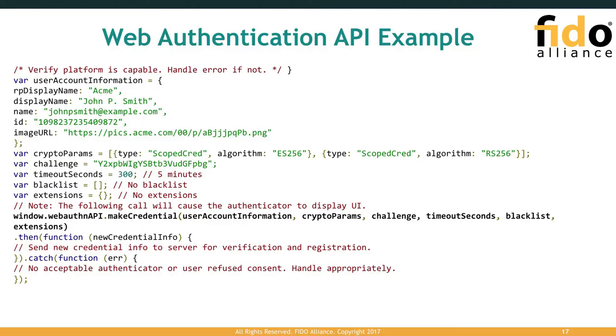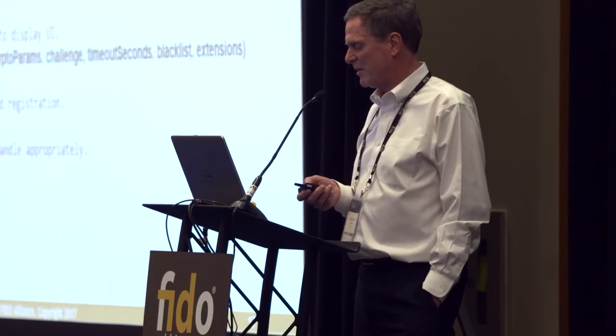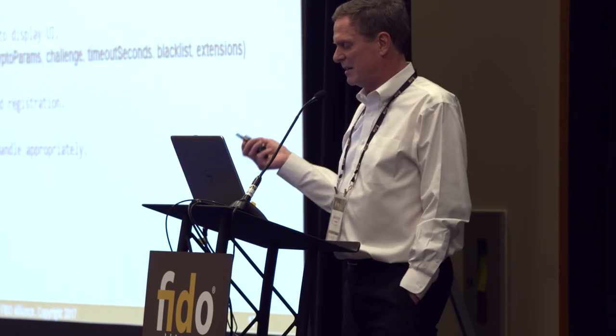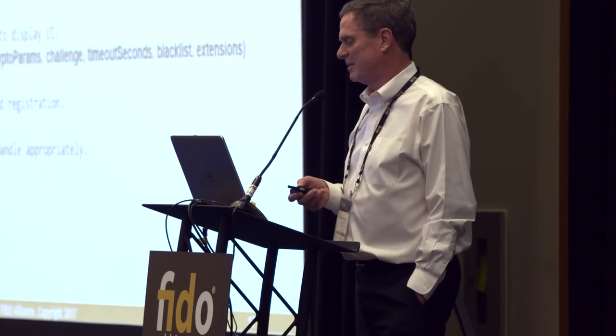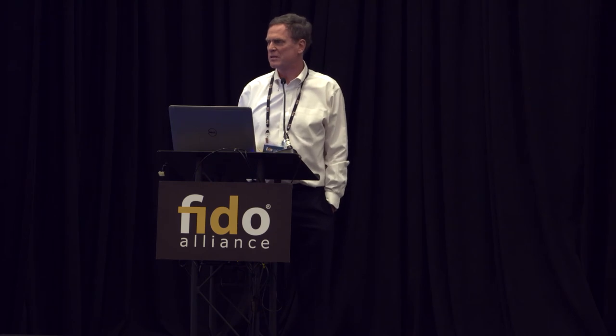Here's a quick example of a web authentication API — it's very simple. We have our crypto parameters and algorithm parameters, and we just wind up calling the make credential API with all that information. It calls down to the native Windows 32 APIs, performs the crypto operations, and returns the results back up. So it's fairly easy from a JavaScript, RP server side to produce this and have it thrown down to the browser to implement.